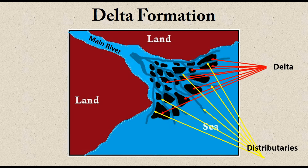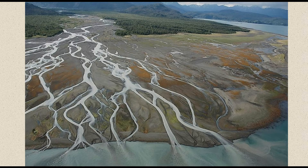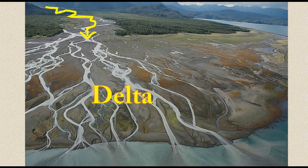The areas on either side of the river, formed by the same process of deposition of sediments, are called flood plains. In this photo, a river comes from the top-left side and after reaching the mouth, has deposited a large amount of sediments, creating a very large delta. You can also see the splitting of the river into multiple distributaries.